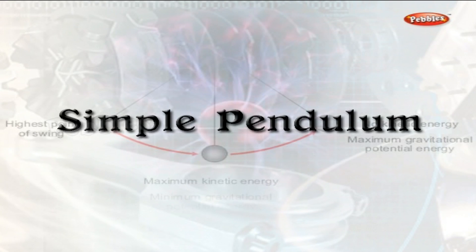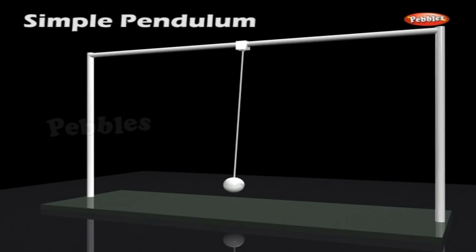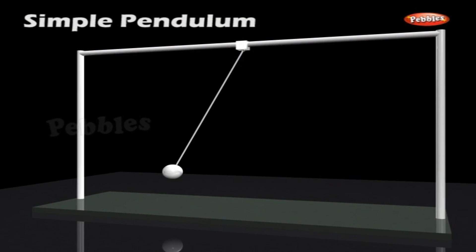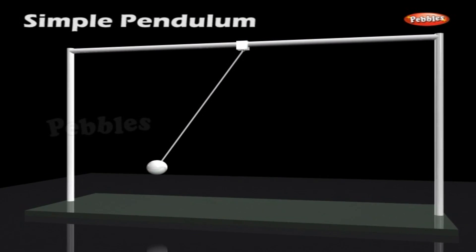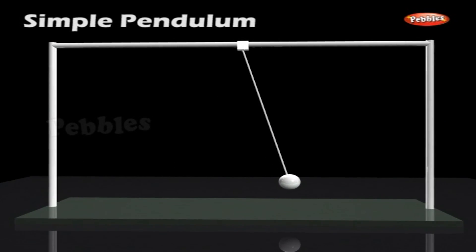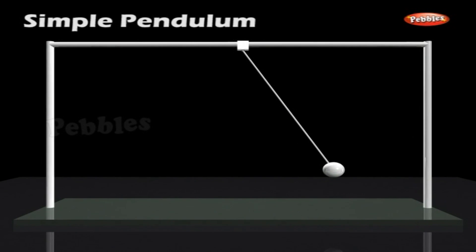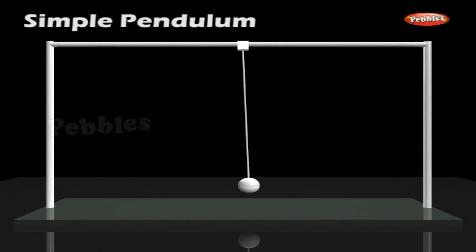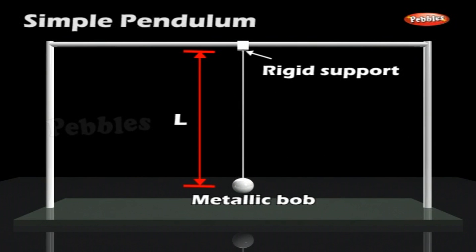Simple Pendulum consists of a heavy metallic bob suspended by a light, inextensible string from a rigid support. The length — the distance between the point of suspension and the centre of the metallic bob — is called the length of the simple pendulum.